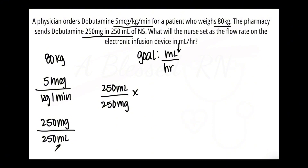Our other puzzle piece doesn't have milligrams — it has micrograms — so we'll need a metric conversion to cancel out the milligrams. I'll put milligrams on top and micrograms on the bottom: 1 milligram equals 1000 micrograms. Now we can cancel out those milligram units.